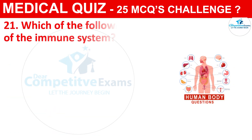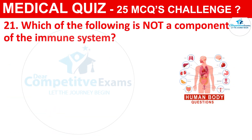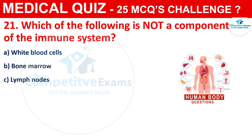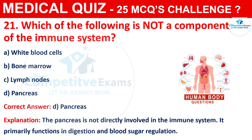Question 21: Which of the following is not a component of the immune system? The options are White Blood Cells, Bone Marrow, Lymph Nodes, or Pancreas. The correct answer is D, that is Pancreas. The pancreas is not directly involved in the immune system; its primary functions are digestion and blood sugar regulation.